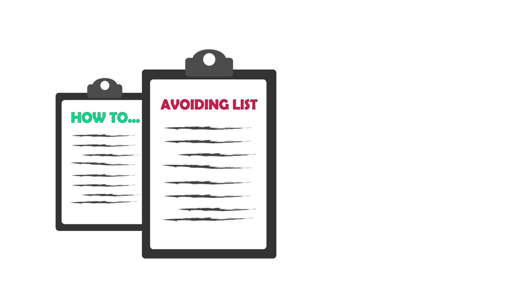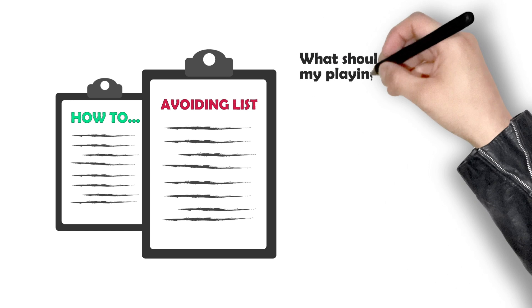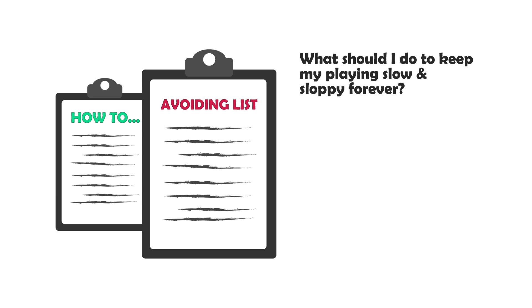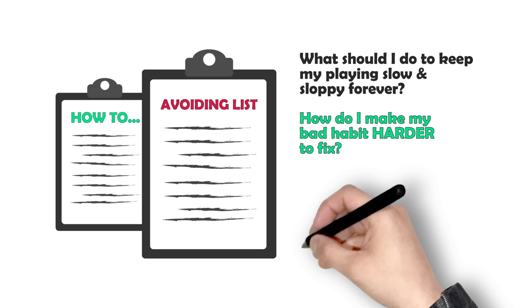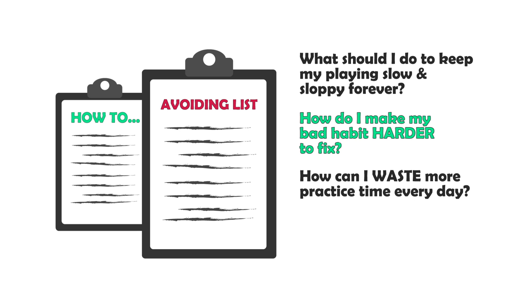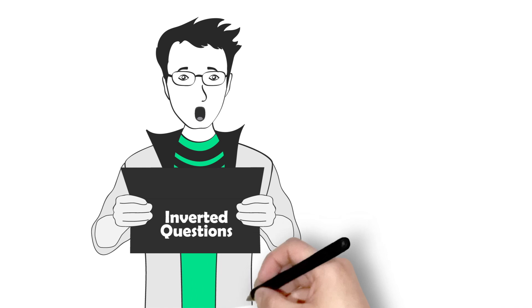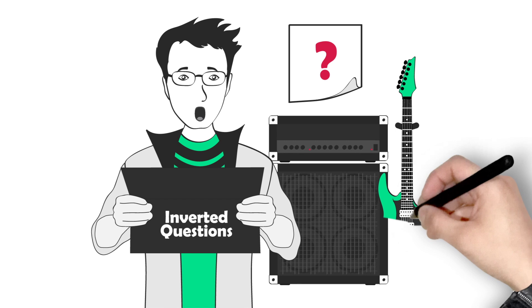Ask yourself: what should I do to keep my guitar playing slow and sloppy forever? I know it sounds ridiculous, but bear with me. With your bad habit, the inverted question might be: how do I make my bad habit even harder to fix? With your lack of practice time, the inverted question might be: how can I waste more practice time each and every day? And with the business example, you can ask: how do I lose all my money and go bankrupt as fast as possible? It's often much easier to answer your inverted questions than the original question. You simply can't go wrong by avoiding things in your problem inversion answer list.